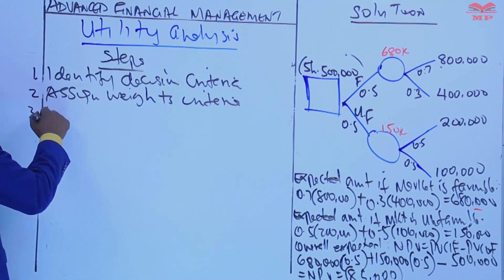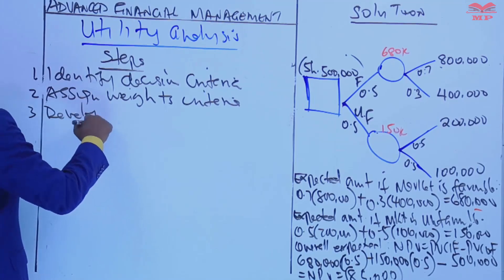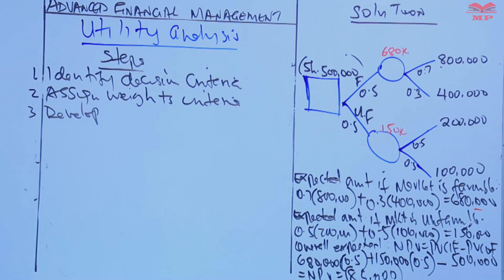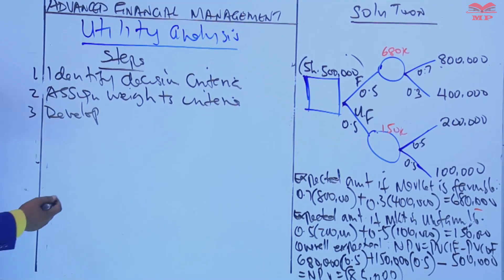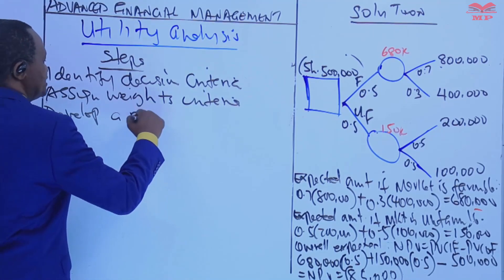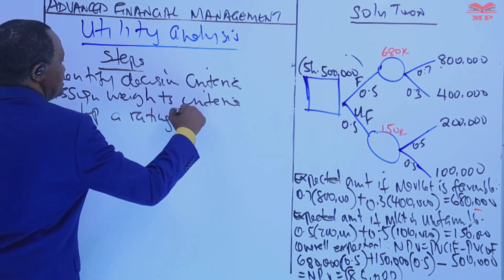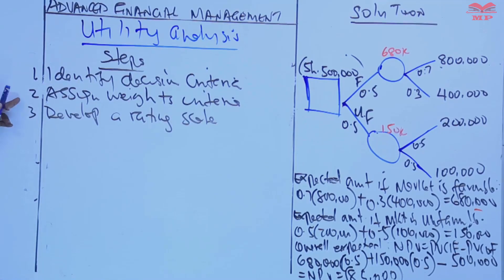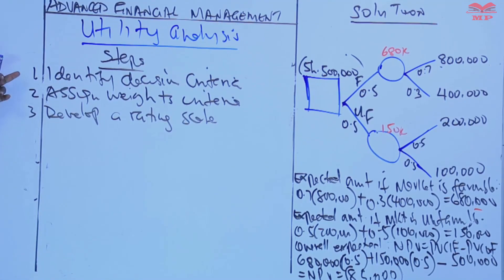Then step three is to develop a rating scale. After you assign weights to the criteria — that is step one and two — you then develop a rating scale.